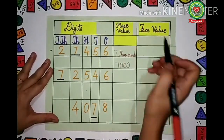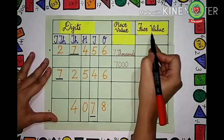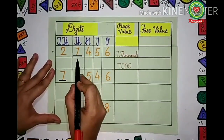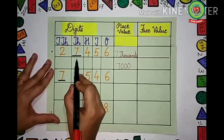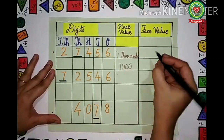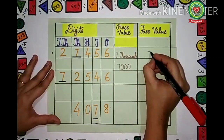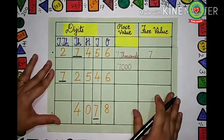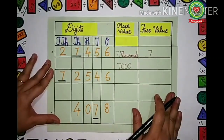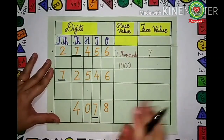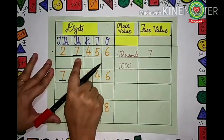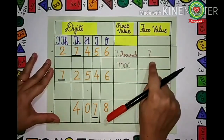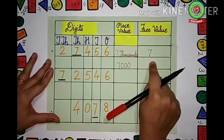They have also asked the face value. What is the face value of 7? The face value of 7 will be 7 itself, because the number never changes in face value.